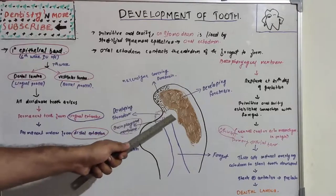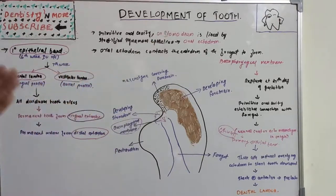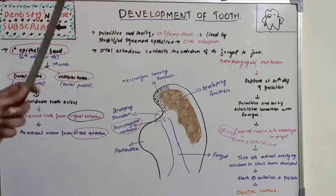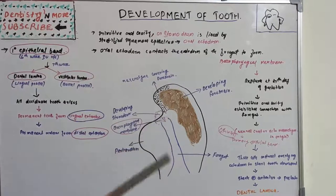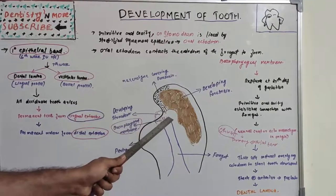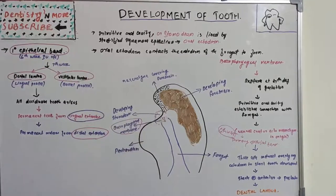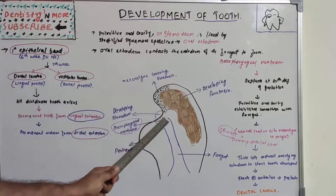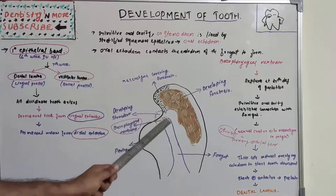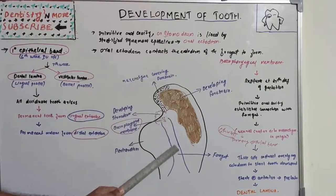We have a primitive oral cavity known as the stomodium, which is lined by stratified squamous epithelium called oral ectoderm. This oral ectoderm contacts the endoderm of the foregut, creating the buccopharyngeal membrane, which is formed by the endoderm of the foregut and the primitive oral cavity.